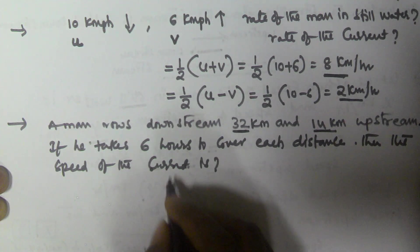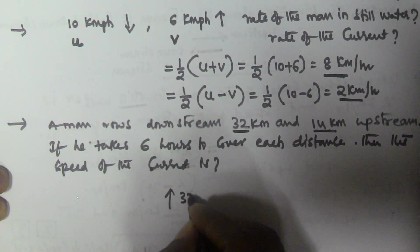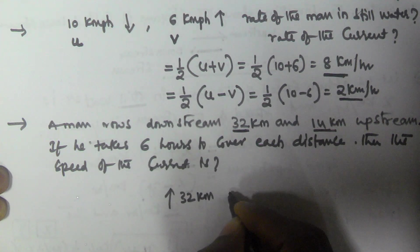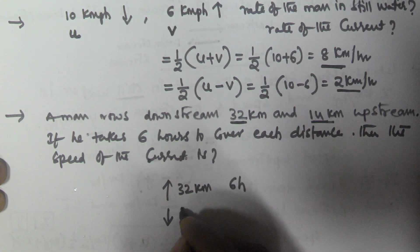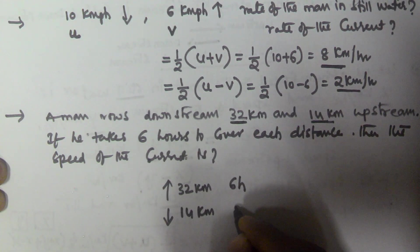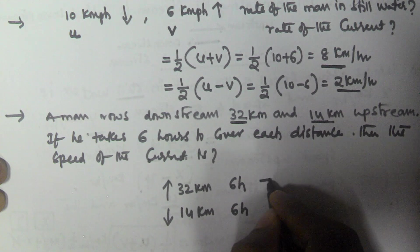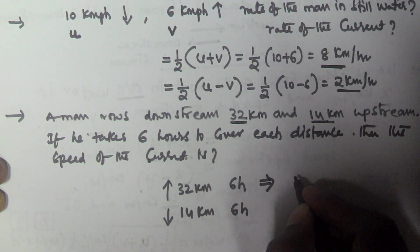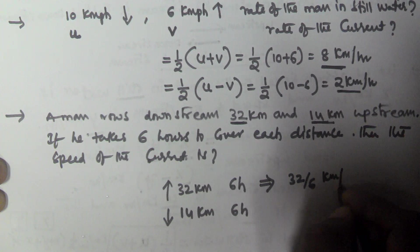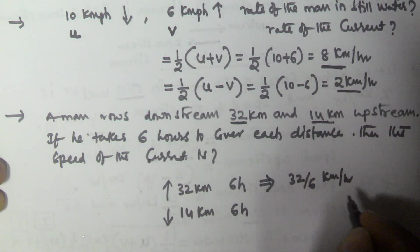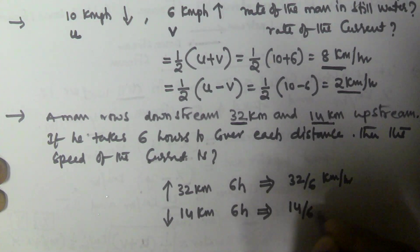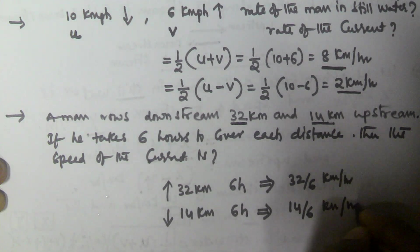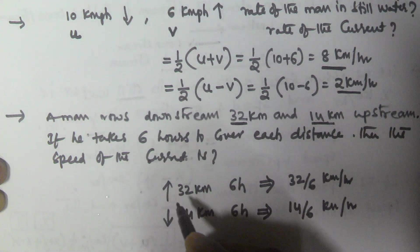He is travelling 32 km downstream in 6 hours and covering 14 km upstream in 6 hours. As we know, speed equals distance divided by time. So the upstream speed is 32/6 km per hour and the downstream speed is 14/6 km per hour. We have to find the speed of the current.